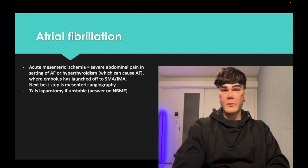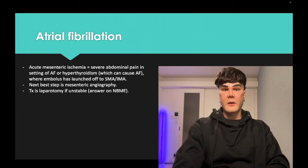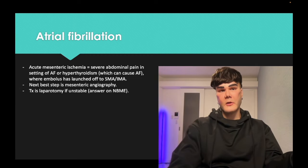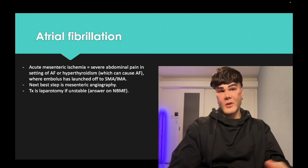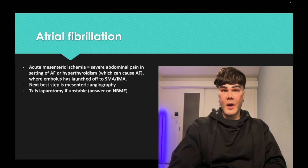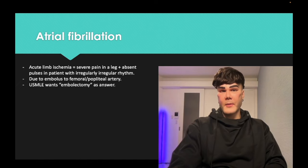If you have severe abdominal pain in the setting of AF, that's a mural thrombus launched off to the SMA or IMA. The next best step is mesenteric angiography — it's pain out of proportion to the physical exam. If someone has atrial fibrillation with severe abdominal pain but nothing eventful on physical exam, the next best step is just mesenteric angiography. There's also a question where they give you an unstable patient and want laparotomy. For acute limb ischemia with the mural thrombus going to a popliteal or femoral artery, embolectomy is the answer.